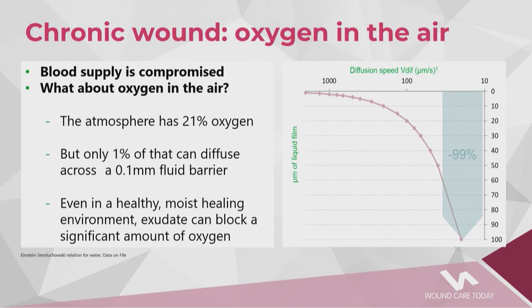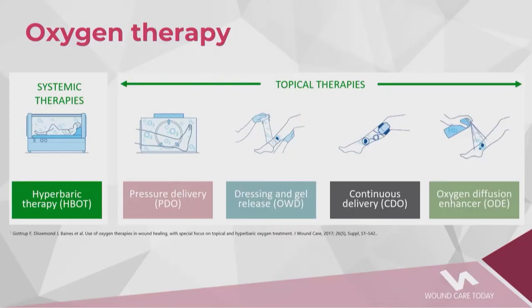In chronic wounds, we know there's a lack of oxygen in many cases. There's more than enough oxygen in the air, but oxygen does not diffuse well through liquid — wound exudate blocks it from getting into the wound bed. So what choices do we have? We could revascularize, but not all patients are suitable. We could dry out wounds, but we need a moist wound bed for cells to migrate. We need a way to transport oxygen through the exudate.